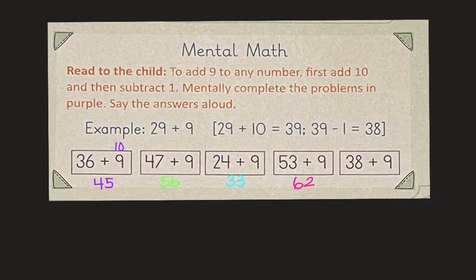Finally, for thirty-eight plus nine, thirty-eight plus ten would be forty-eight. Forty-eight minus one is forty-seven.